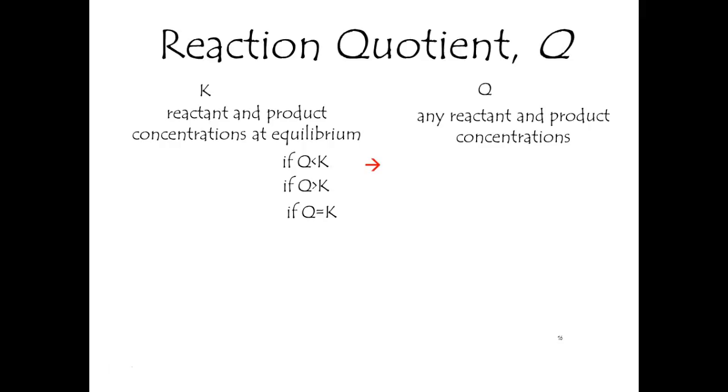These are really how you can compare them. Suppose that the reaction quotient is greater than K. Somehow you went beyond equilibrium. It's like you have too much product. It's going to shift to the left.